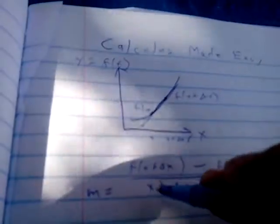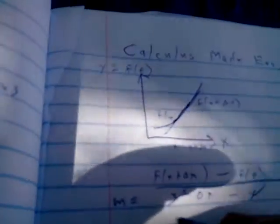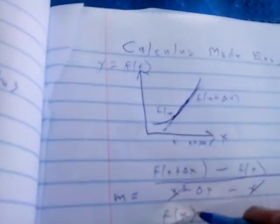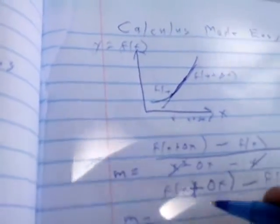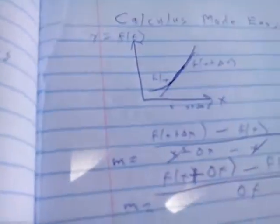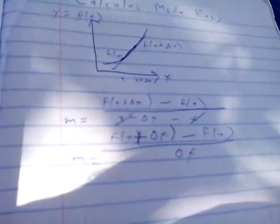Now, of course, the x is dropped out. And you say m equals the slope between the two points is equal to function of x plus delta x minus function of x over delta x. This is the general formula to figure out the slope between two points on any general function.